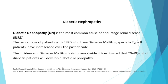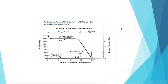Diabetic nephropathy is the most common cause of end-stage renal disease. The percentage of patients with end-stage renal disease who have diabetes mellitus — especially type 2 — has increased over the past decade. The incidence of diabetes mellitus is rising worldwide, and it is estimated that 20 to 40% of all diabetic patients will develop diabetic nephropathy.